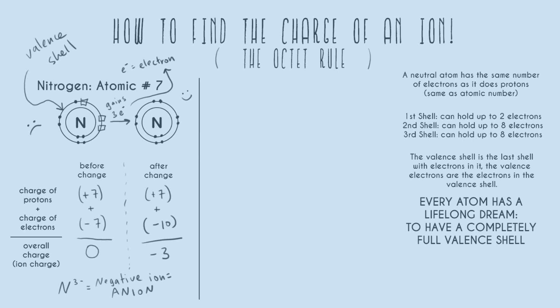Now let's look at sodium, which is atomic number eleven. We draw out electrons for sodium the same way: a neutral atom has the same number of electrons as protons, so we draw in eleven electrons. We fill our first orbital with two, then fill the second orbital completely with eight — that's a total of ten — and then add one more electron into the third orbital. Today we're only covering the first, second, and third shells, though there are more shells with their own rules.